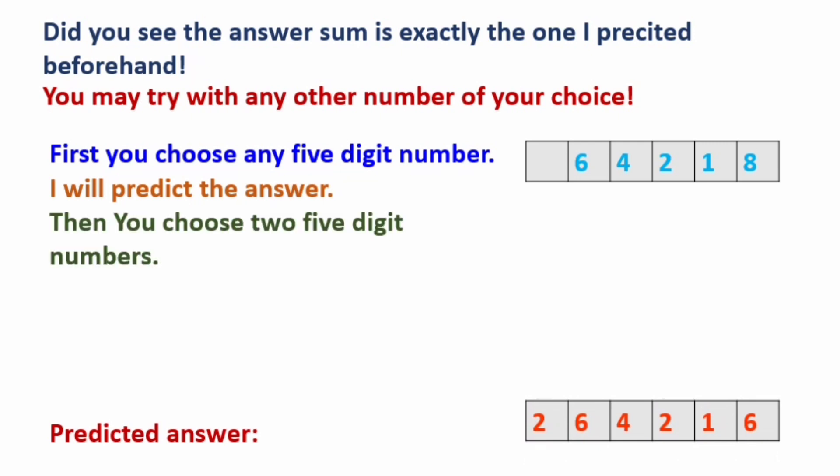Now in the same way, write the other numbers. Then you choose two 5 digit numbers. For example, 46,874 and 14,265.